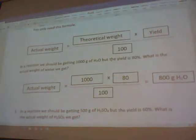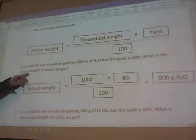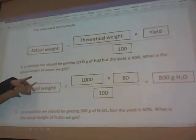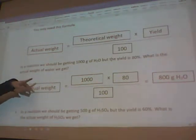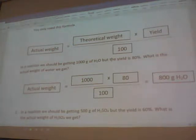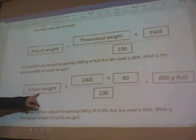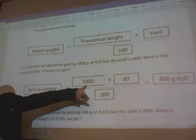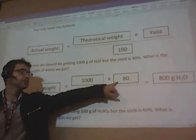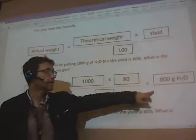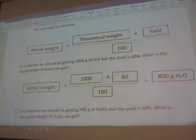And the yield is a percentage. Okay, this example: in a reaction we should be getting a thousand grams of water but the yield is 80%. What is the actual weight of water we get? So you should be getting a thousand, but you calculate as 80% of a thousand, that is 800 grams of water.